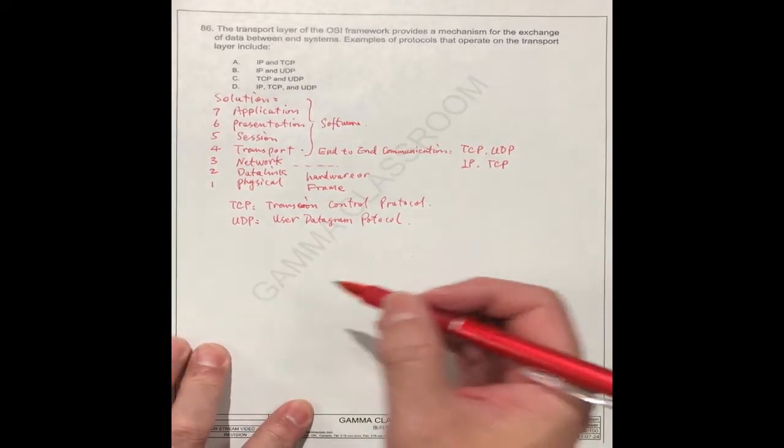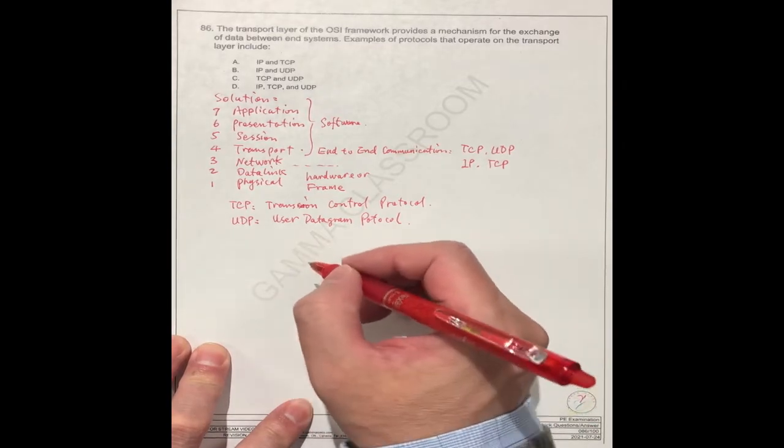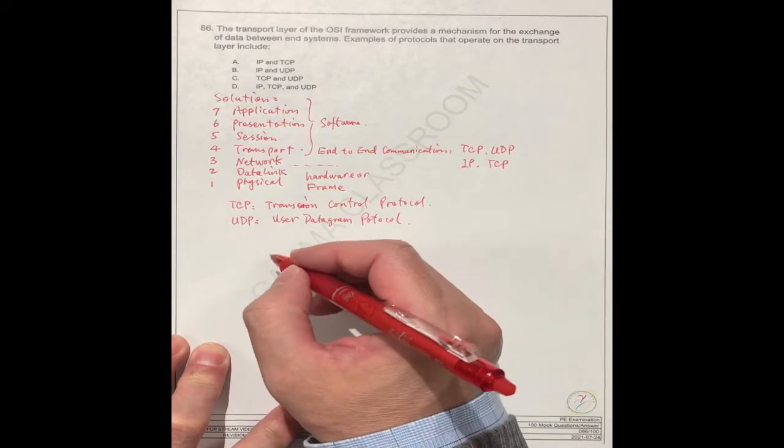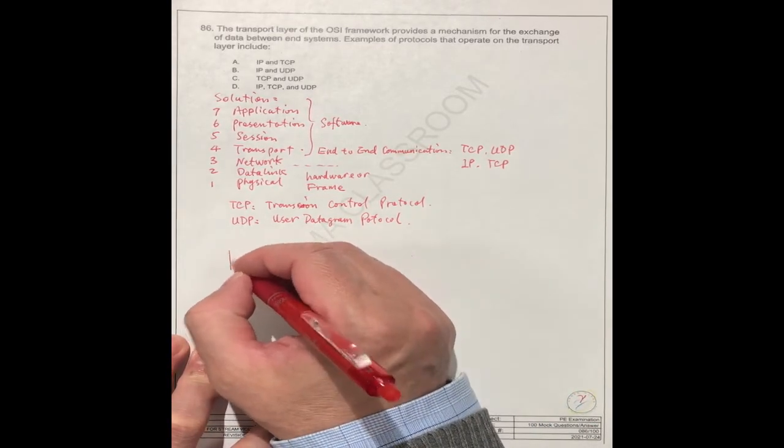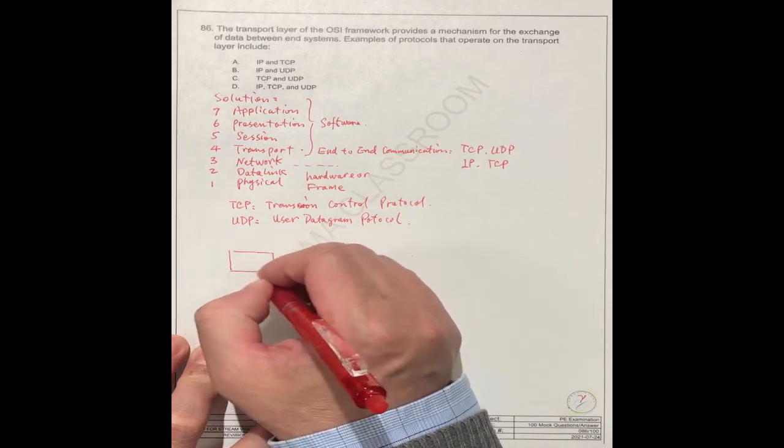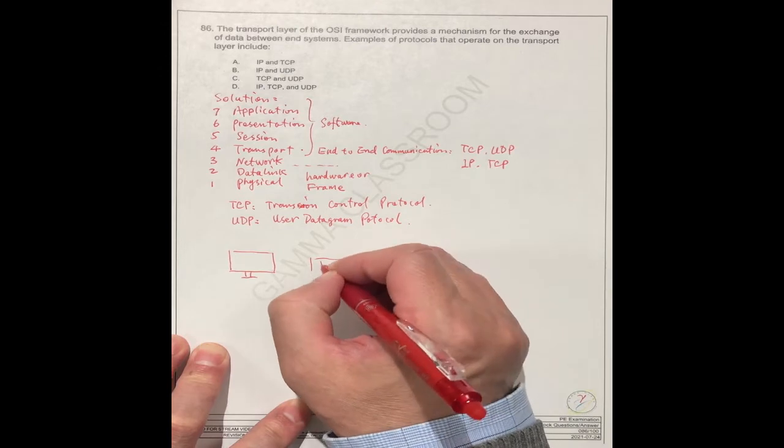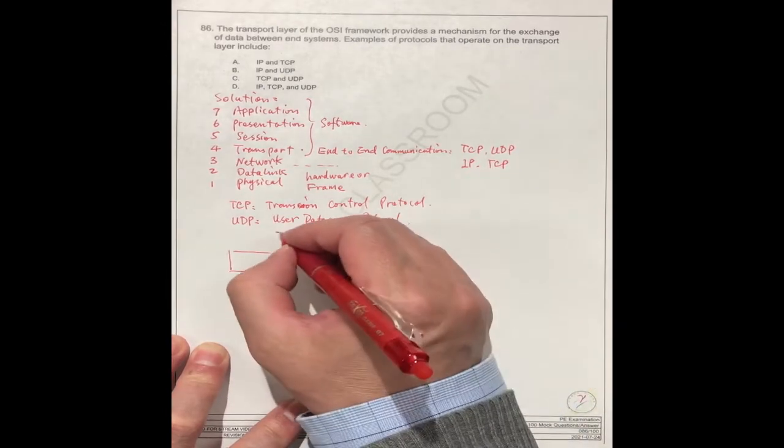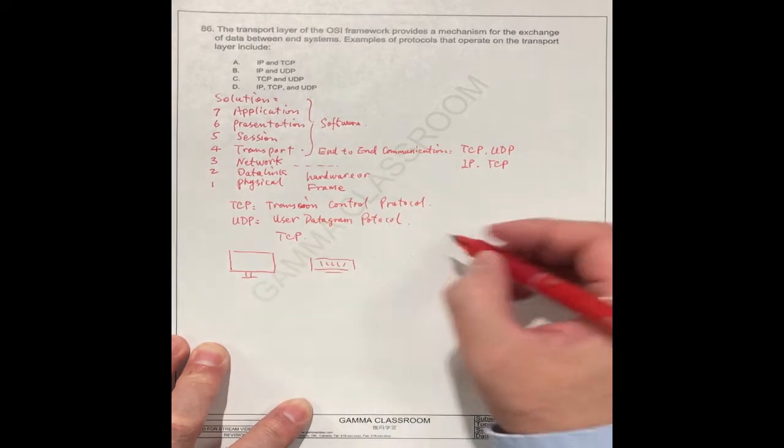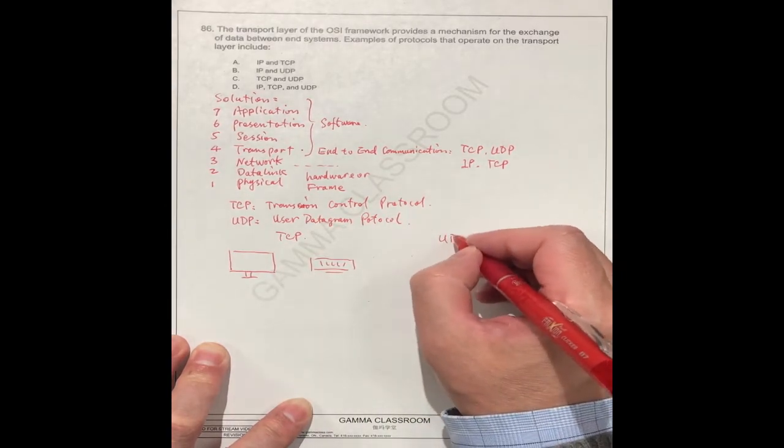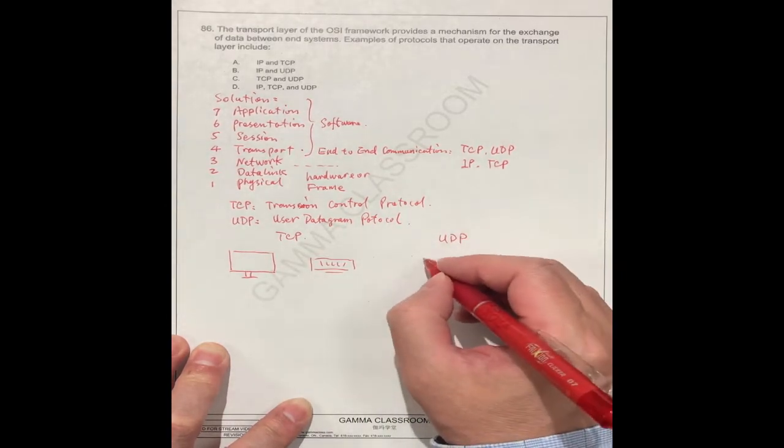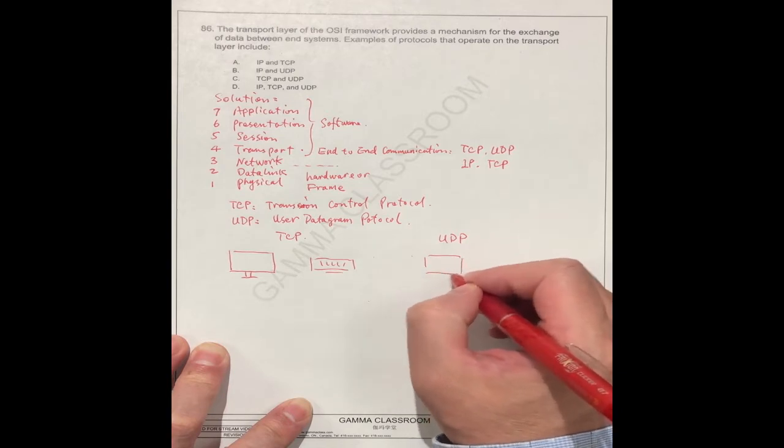So for TCP, what is the TCP versus UDP difference? We can draw a diagram. This is the computer, this is the user. This is for the TCP, and this is the UDP.